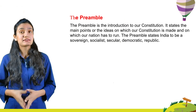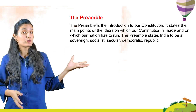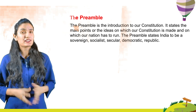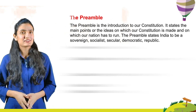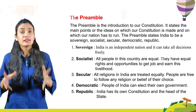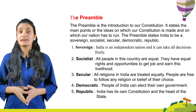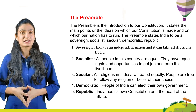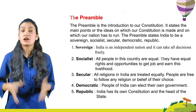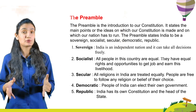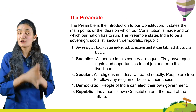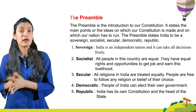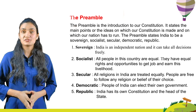The Preamble states India to be a Sovereign, Socialist, Secular, Democratic Republic. Sovereign means India is an independent nation and it can take all decisions freely. Socialist means all people in this country are equal. They have equal rights and opportunities to get jobs and earn their livelihood.